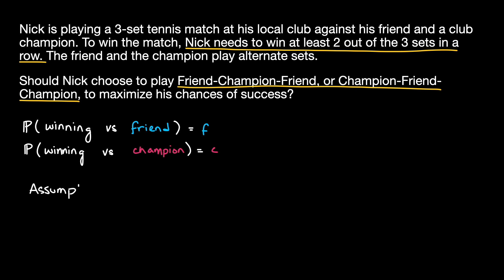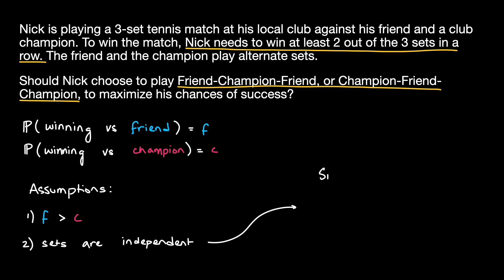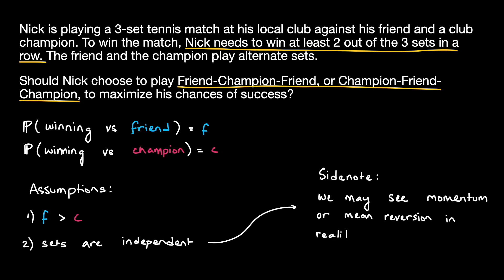Let's state some assumptions about the question. We can assume that the champion is a better tennis player than the friend. Therefore, the probability F is strictly greater than the probability C. Next, let's assume that the sets are independent from each other. As a quick side note, this may not be the most realistic assumption because we may see momentum or mean reversion behavior in reality due to sports psychology. For example, winning the first set may make you feel more confident, therefore leading to a higher chance of winning the second set. Alternatively, losing the first set may make you even more determined to win in the next set.